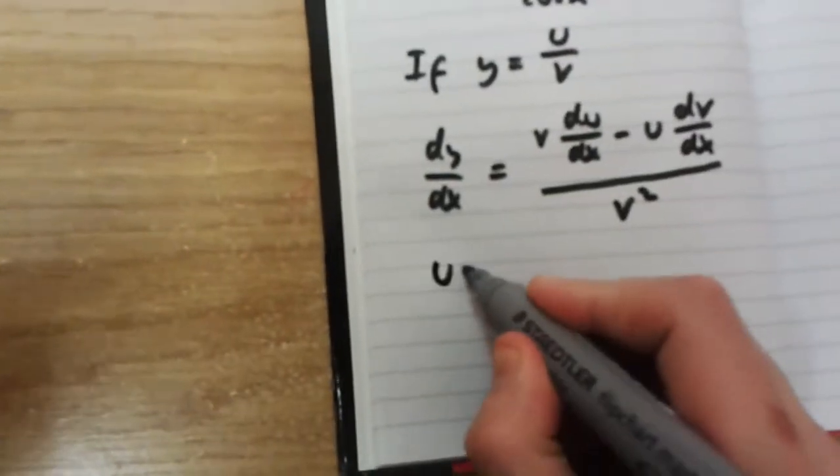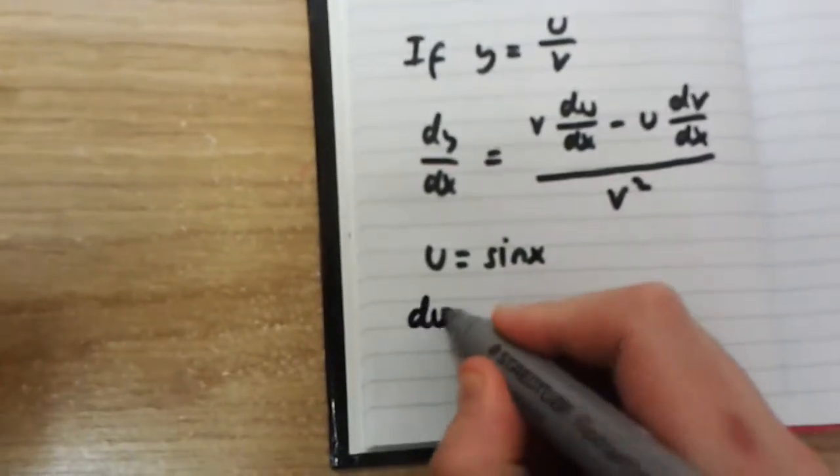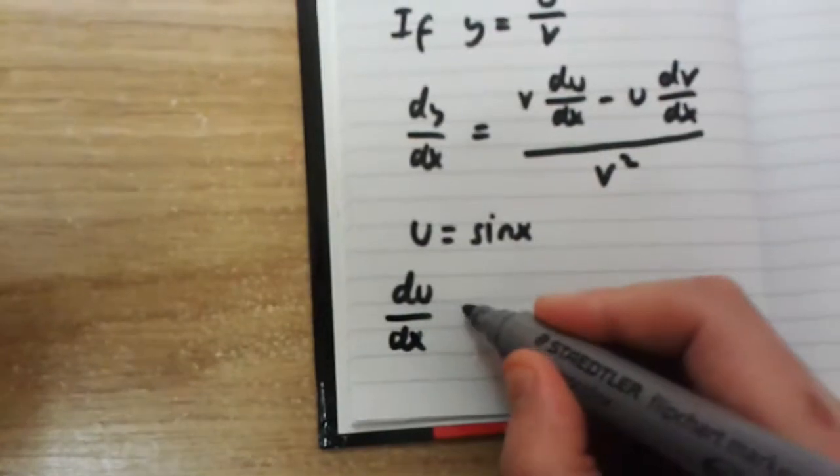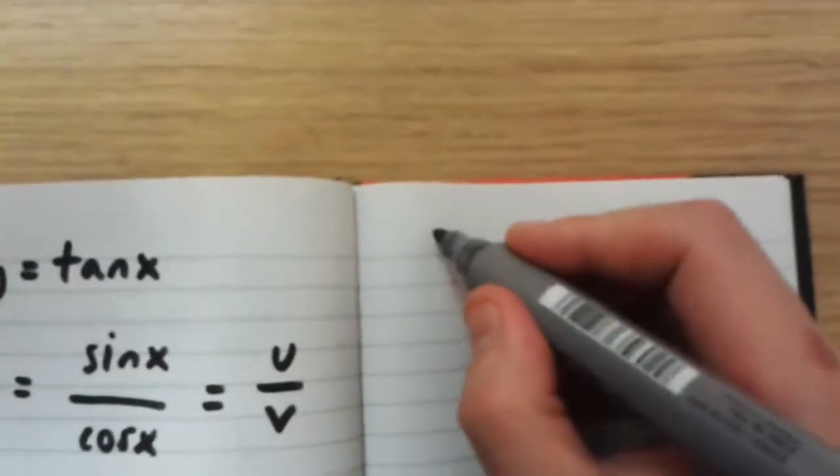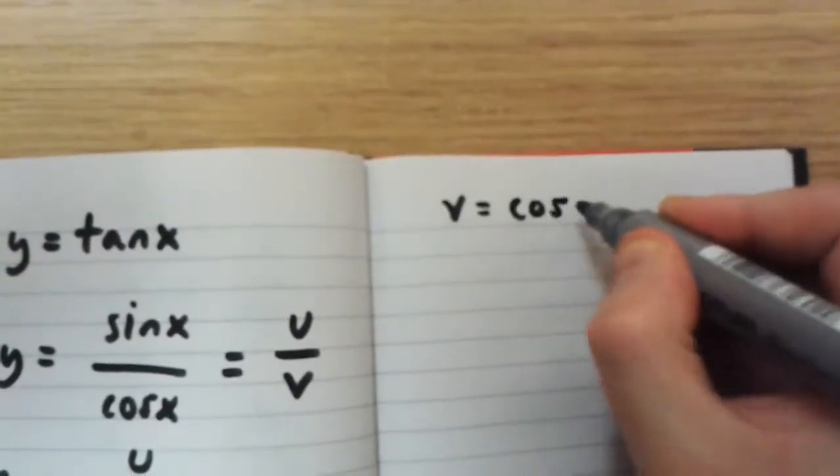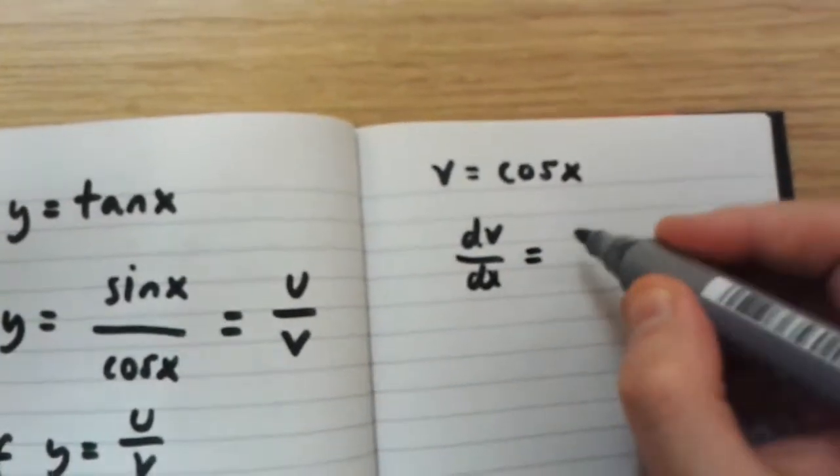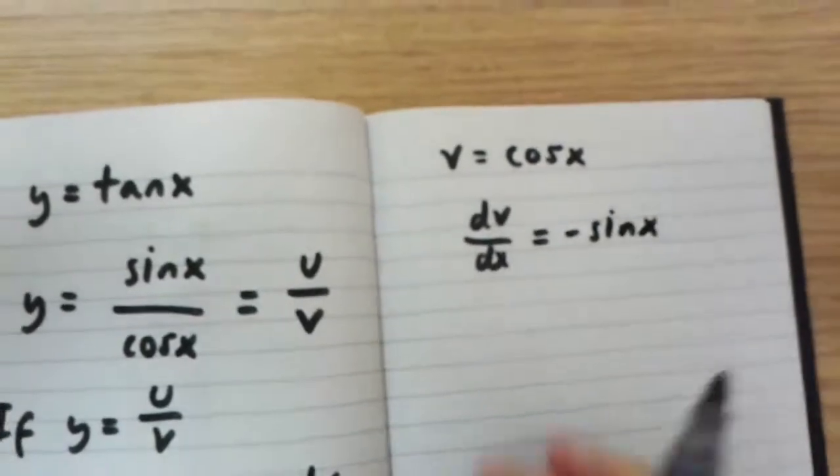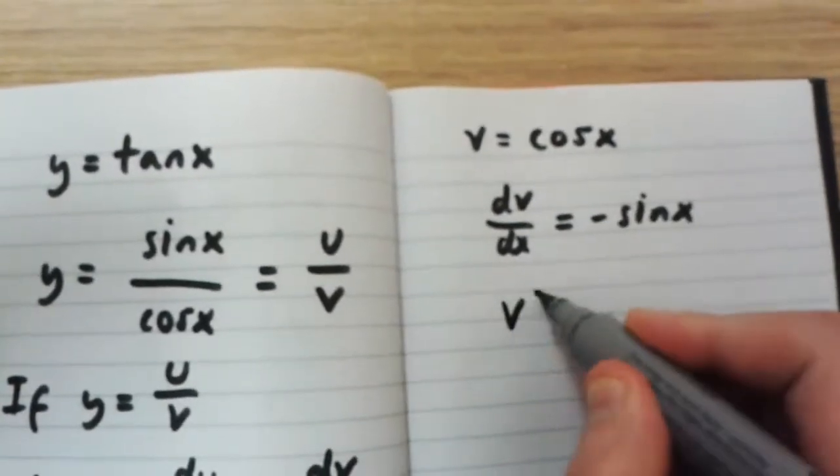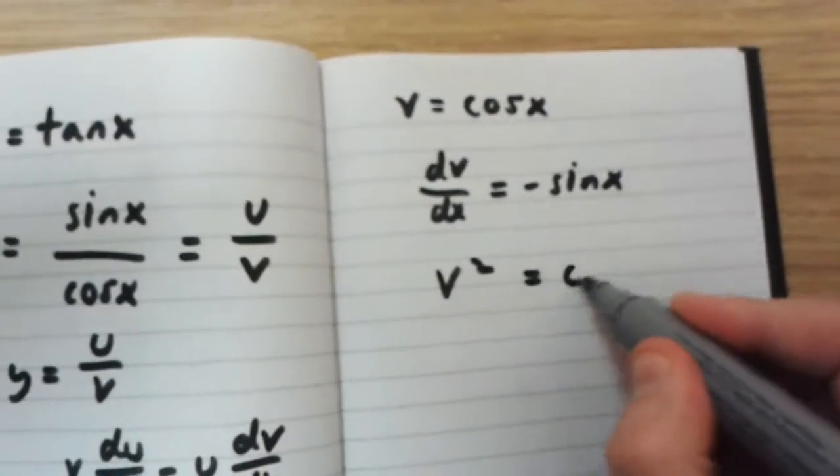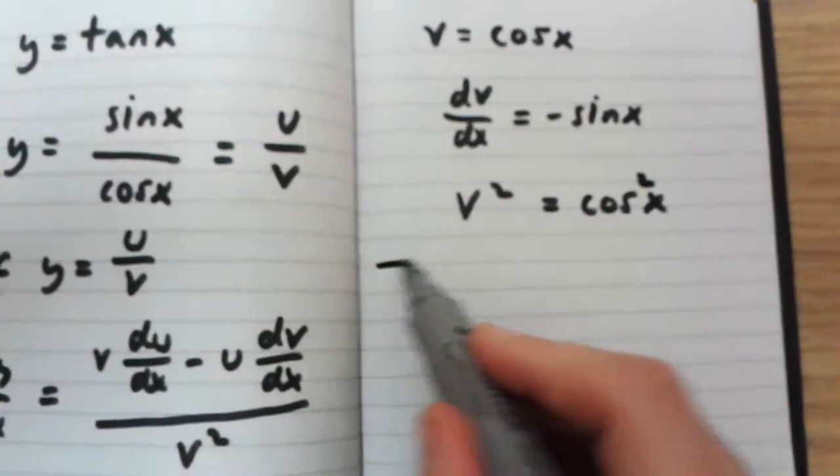So, we've got u is equal to sin x. Therefore, du over dx is equal to cos x. And we've also got v is equal to cos x. Therefore, dv over dx is equal to minus sin x. And what you also have to remember is that v squared is equal to cos x squared.